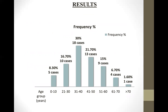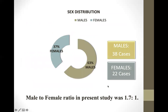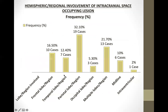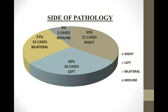As you can see, the predominant age group involved was 31 to 40, followed by 41 to 50. Sex distribution was 1.7:1. The clinical presentation was headache, followed by seizures, and then other symptoms. Hemispheric involvement shows the parietal lobe was most commonly involved, followed by multi-lobar and then the frontal lobe. Right-sided cases were most common, followed by bilateral and then the left hemisphere.